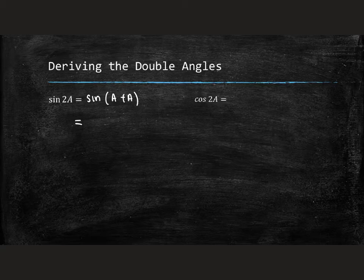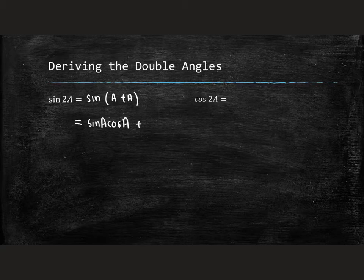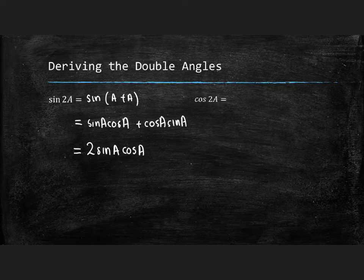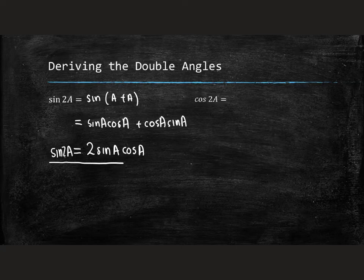Well, sin of a plus a is expansion of a compound angle. It would be sin a cos a, added to cos a sin a. But really, these two expressions are identical to each other. So what we get is 2 times sin a cos a. And that's where the double angle comes from. Sin of 2a equals 2 times sin a cos a.